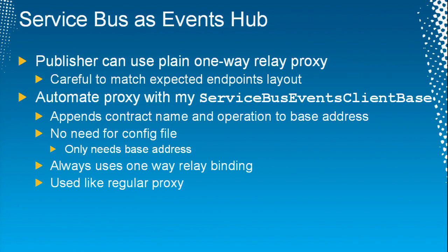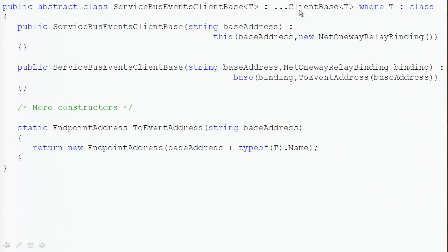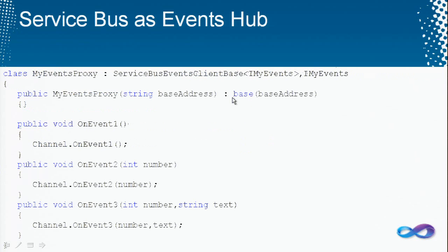For the publisher side, you can use a regular one-way relay binding with a regular proxy. The event relay binding has no meaning for the publisher. But you need to be careful about matching — the address needs to be slash-contract slash-event. So I have a dedicated proxy called Service Bus Events Client Base, used just like a regular proxy, except there's no need for any config file — all it needs is the base address. Its constructor takes the base address; the slash-contract part is appended in the constructor, and the slash-event part is done by the channel call. Internally, this leverages what all WCF proxies already do.